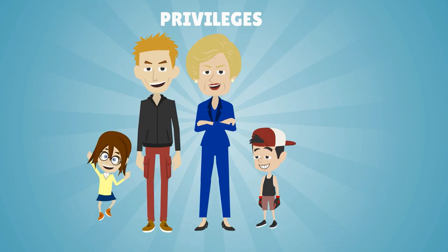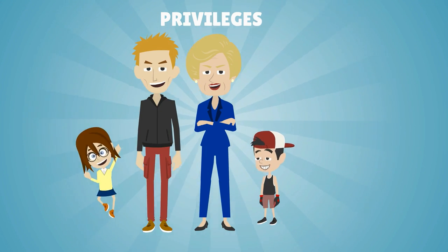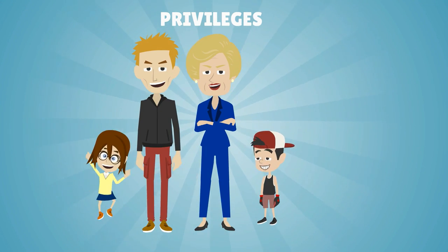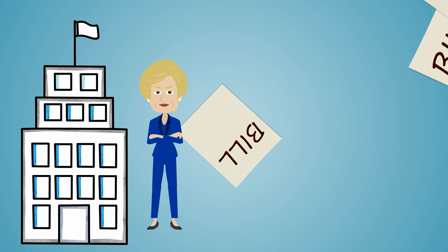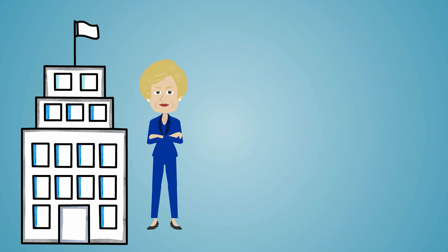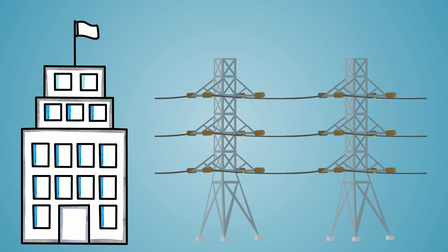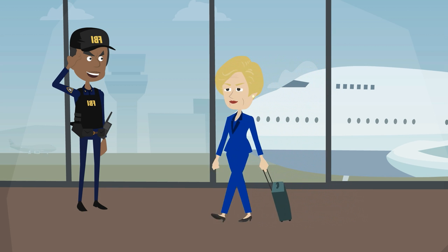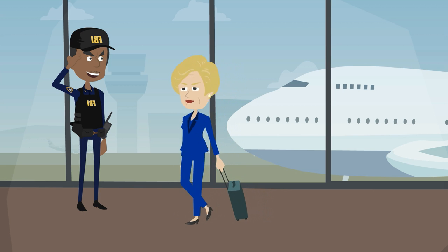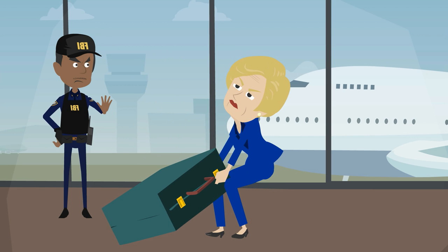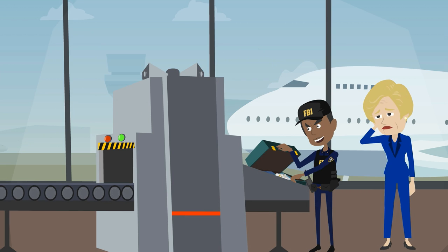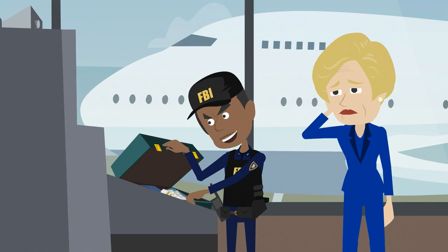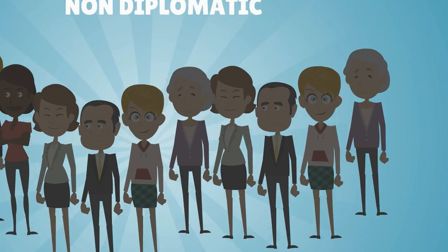In addition to immunities, the envoy and his family also enjoy certain privileges in the hosting country. The embassy is exempt from paying taxes, except for payment for services like electricity or water bills. The diplomat is also exempt from baggage inspection, unless there are serious grounds that his baggage contains prohibited or illegal materials.